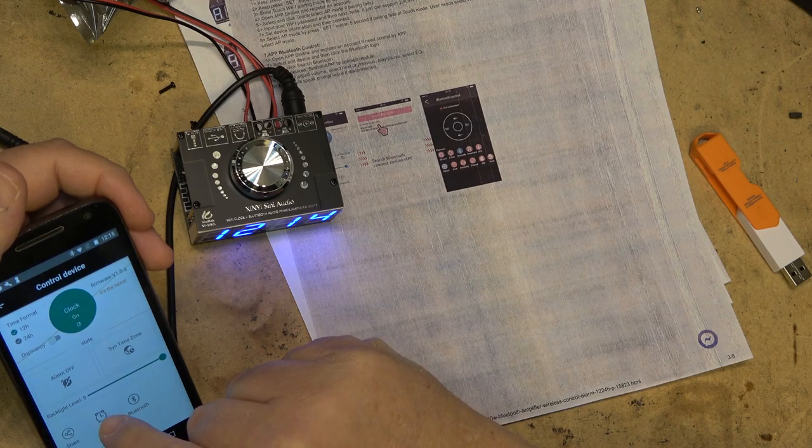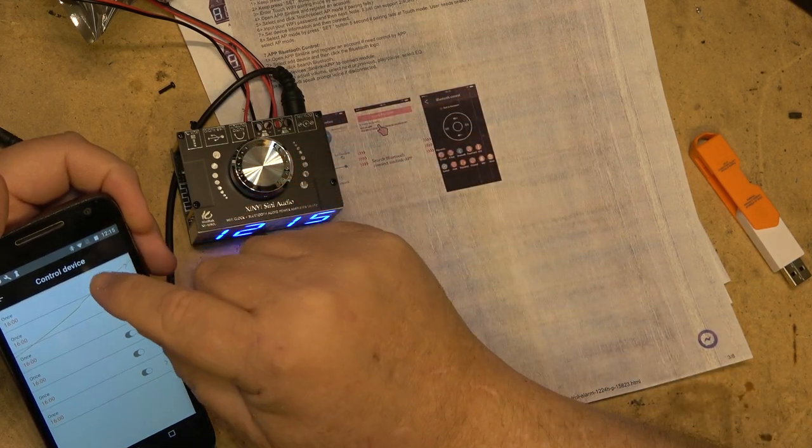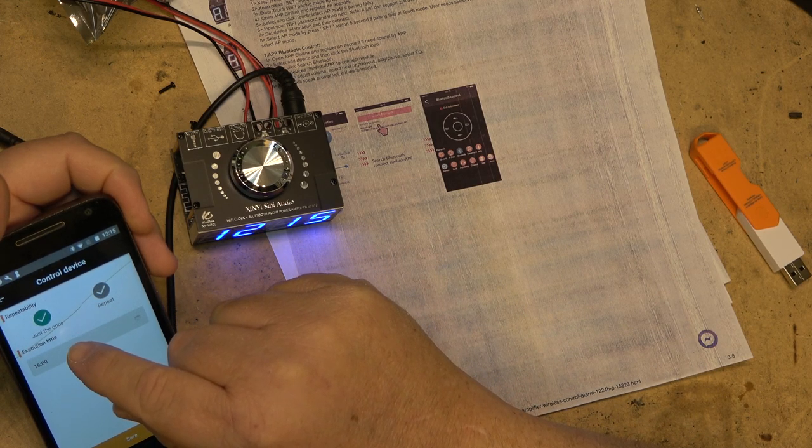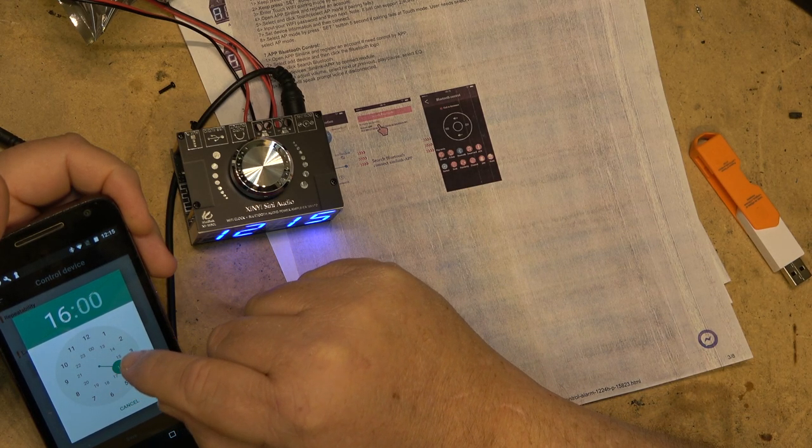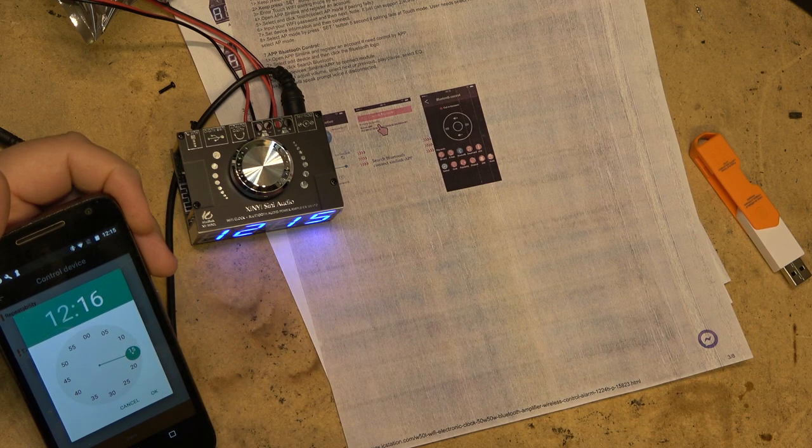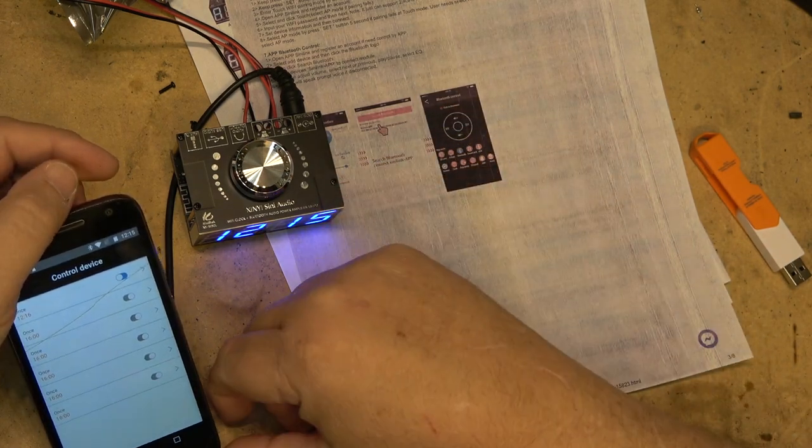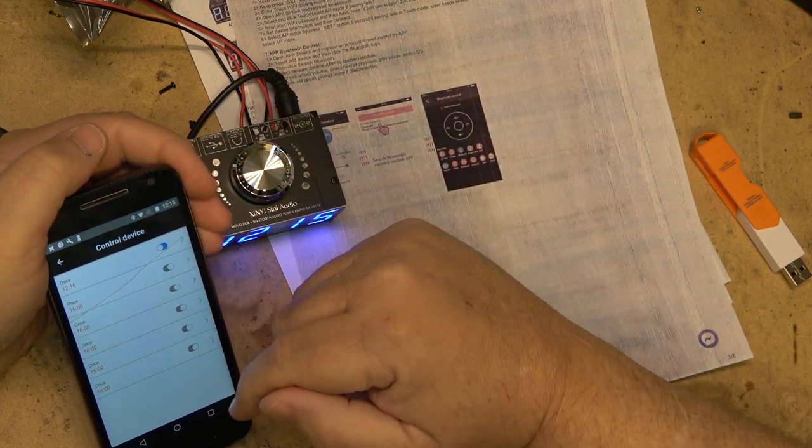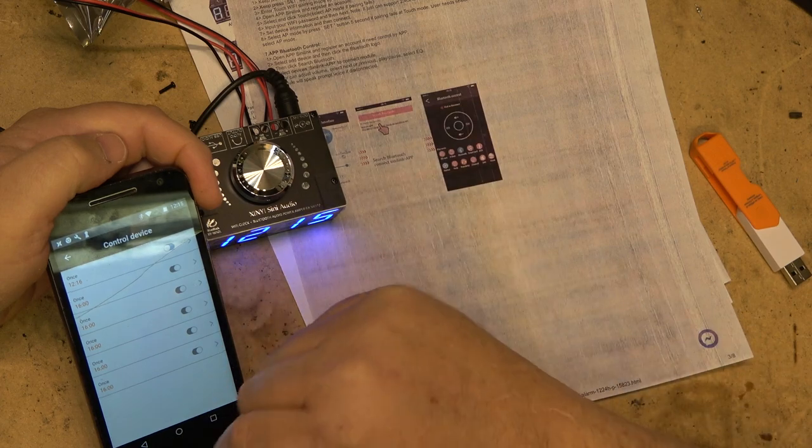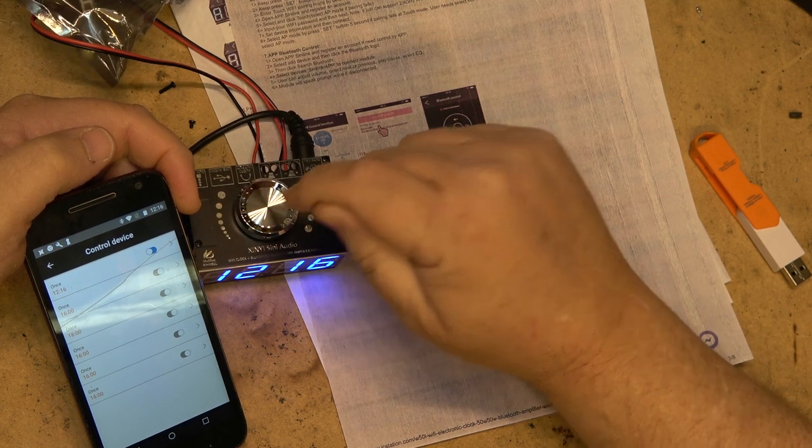This is where I can set alarms. You've got six alarms that can be set. If I want to set the clock to just one time, say 12:16. So I take it to 12:16. Save. At 12:16, the alarm should go. That stops it.